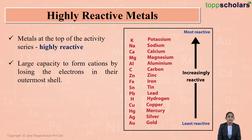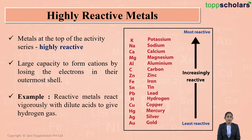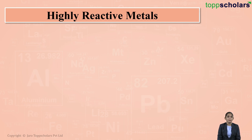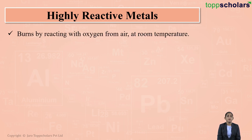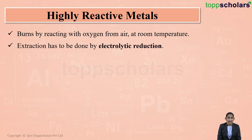These highly reactive metals have a very large tendency to lose electrons from their valence shell, resulting in the formation of cations. For example, these reactive metals react very vigorously with dilute acid, liberating hydrogen gas. They also react with oxygen at room temperature, and thereby need to be extracted by electrolytic reduction.